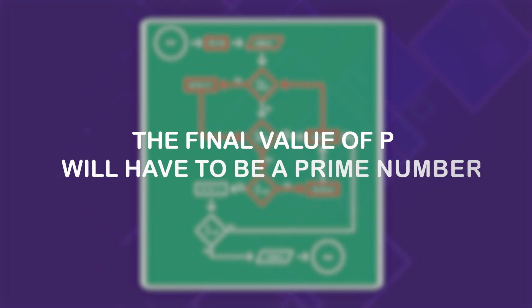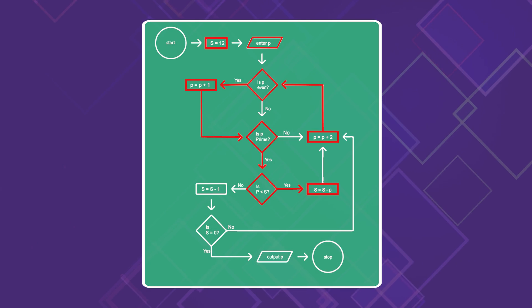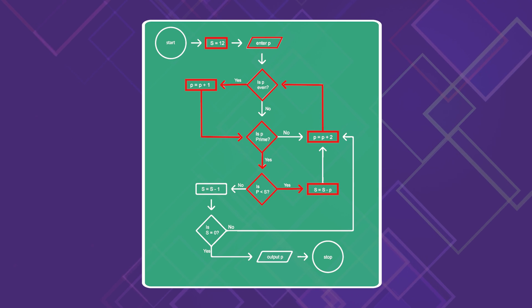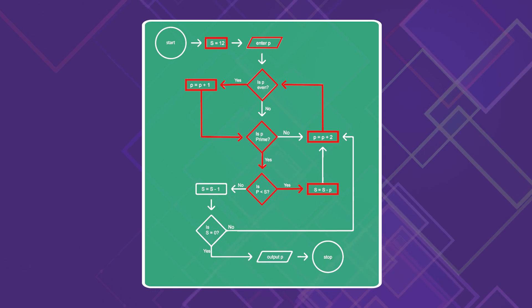Notice also the output, the final value of p, will have to be a prime number. Because the only way that we break out of that upper loop and get to the lower half of the flowchart is when p is prime. So the output is always prime. Those are all the things I noticed just scanning the flowchart without plugging anything in.